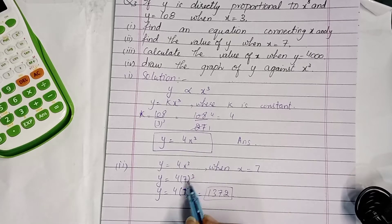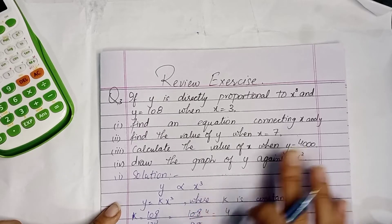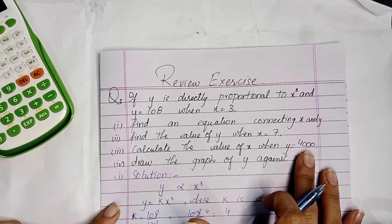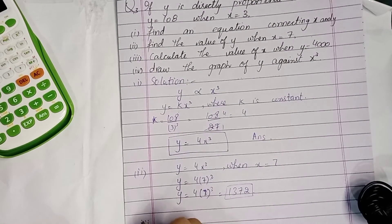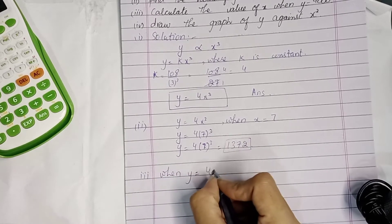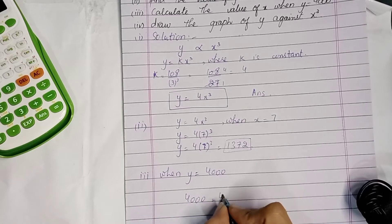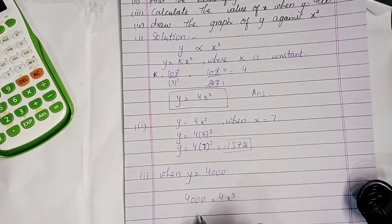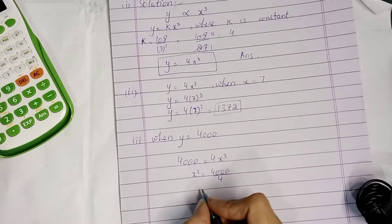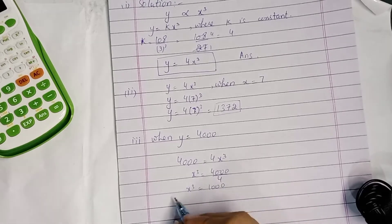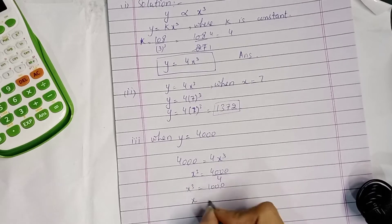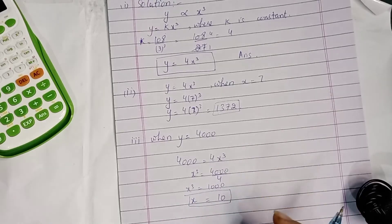Now we have to calculate the value of x when y is equal to 4000. You need to find out the value of x. Substituting: 4000 equals 4x cubed, so x cubed equals 1000. When we take the cube root of both sides, we get x equals 10. This is the answer for part 3.